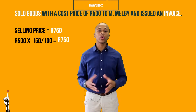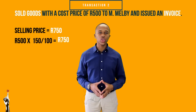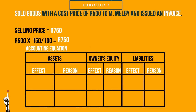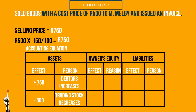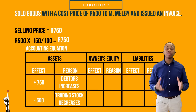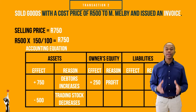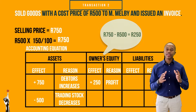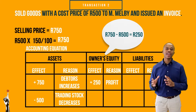How will we record this transaction on the accounting equation? Debtors, which is an asset, will increase as another business bought on credit from the business. Trading stock, which is also an asset, will decrease as we have sold trading stock. It is also important to record whether the business made any profit or loss. The business has made a profit of R250 — that is R750 minus R500.